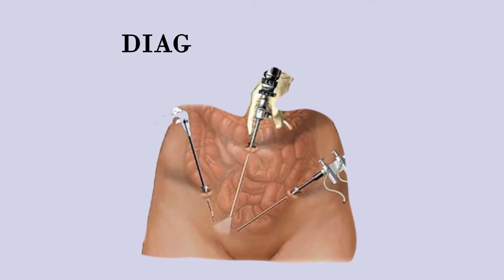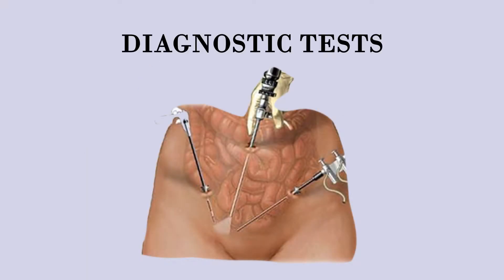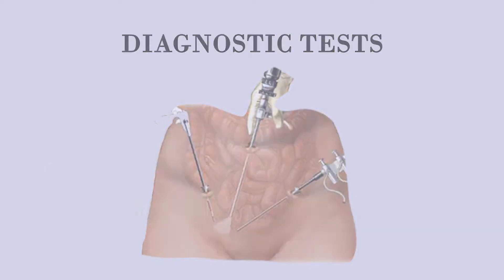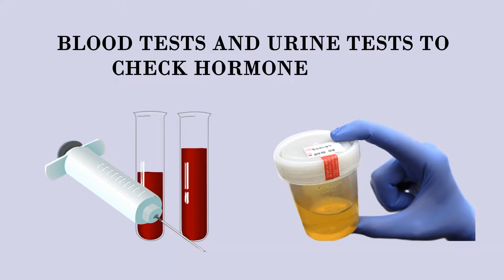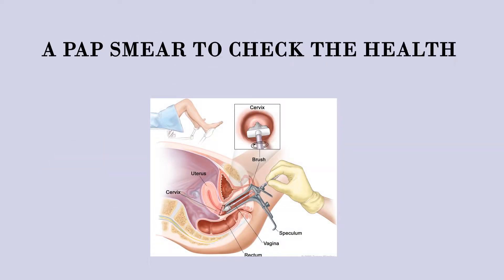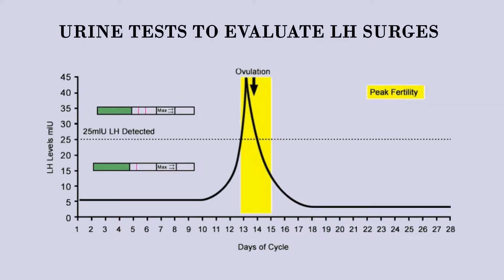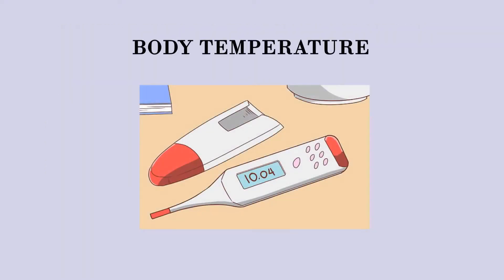After that, some of the diagnostic tests for infertility might include blood tests and urine tests to check hormone levels, a pap smear to check the health of the cervix, urine tests to evaluate LH surges, and a basal body temperature test which checks whether the woman is releasing eggs from her ovaries.